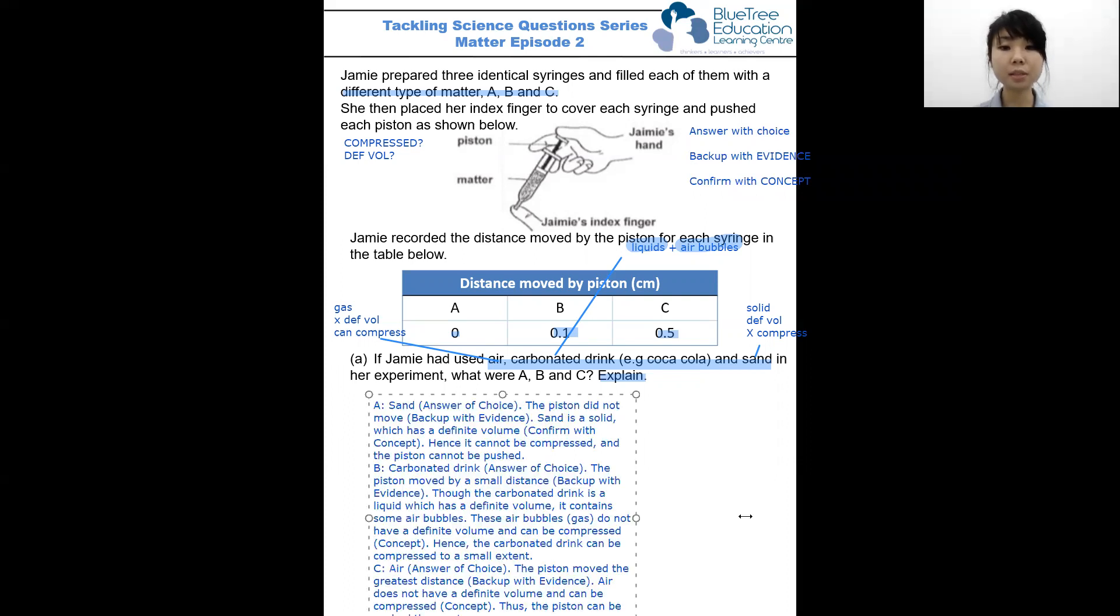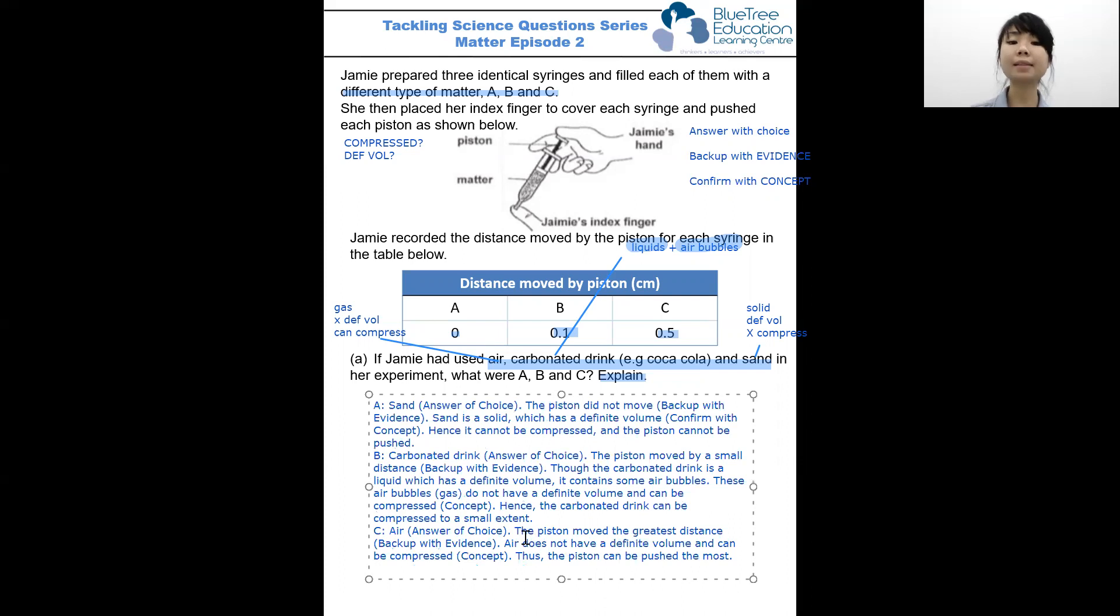So, let's look at the answer. For A, the answer is sand. The evidence being the piston moved by zero cm, it didn't move, and the concept is sand is a solid which has a definite volume. Since it has a definite volume, it will not be able to be compressed, and the piston cannot be pushed.